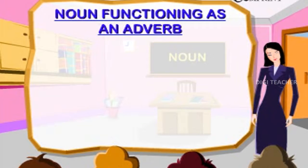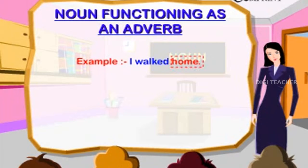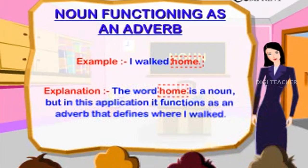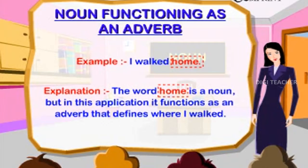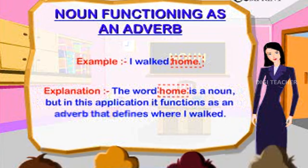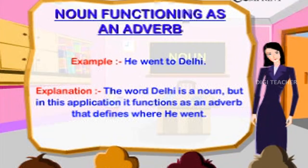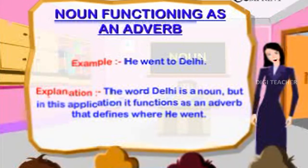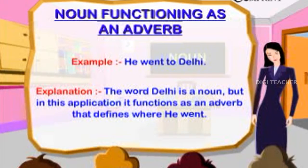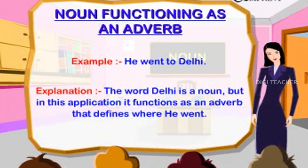Noun functioning as an adverb. Example: I walked home. The word 'home' is a noun, but in this application it functions as an adverb that defines where I walked. Example: He went to Delhi. The word 'Delhi' is a noun.